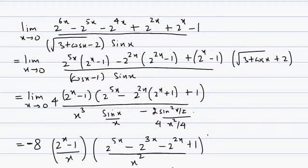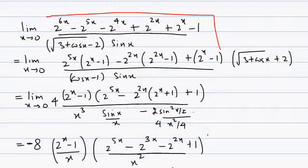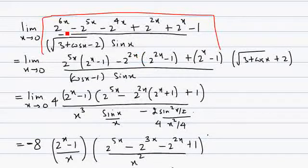This is a problem based on limits. We have to work out the limiting value of this expression. Before we start, we need to check whether it is in indeterminate form or not, because if it is not in indeterminate form we just replace the value of x and get the limiting value. When x approaches 0, 2 to the power 0 is 1, so all these quantities become 1, making 1 minus 1 equal to 0.